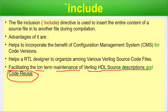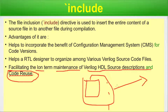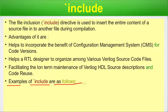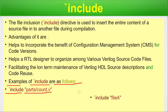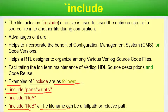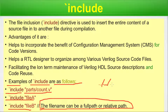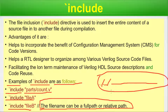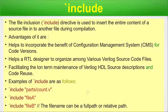The backtick include also facilitates long-term maintenance of Verilog HDL source descriptions and code reuse. Code reuse is very important — you write a piece of code once, keep it in a repository or a hard disk location, then use the include directive to include it wherever needed. Examples of backtick include: backtick include then parts then count.v, include file a, include file b. The file name can be a full path or a relative path (e.g., using dot-dot slash notation). Please watch our Linux series for relative and absolute path explanations; the link is in the video description.